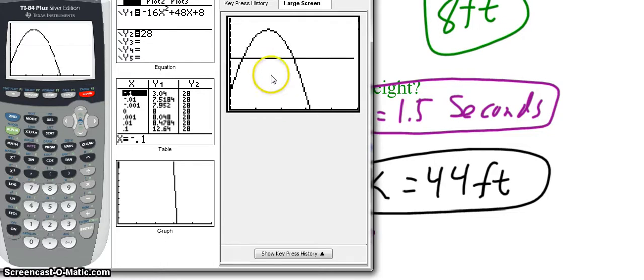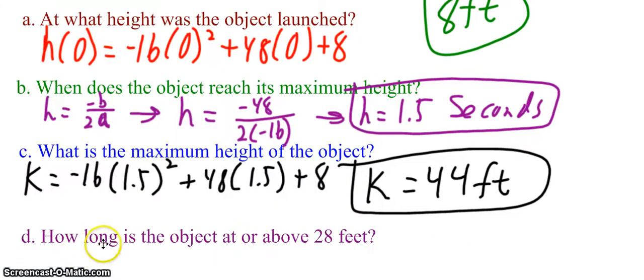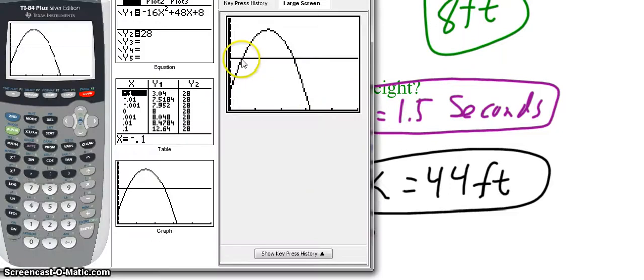So now we can see this. And we can see this line is the y equals 28. The question wanted to know how long is the object at or above 28 feet. So I need to find how much time happened here, right? In order to do that, I want to find where these intersect.